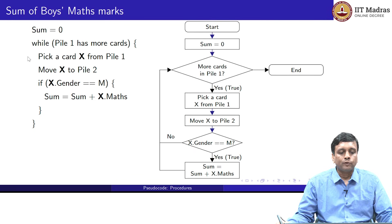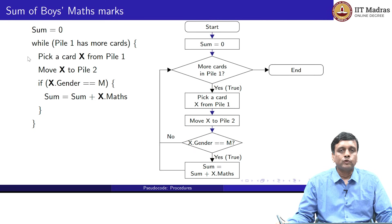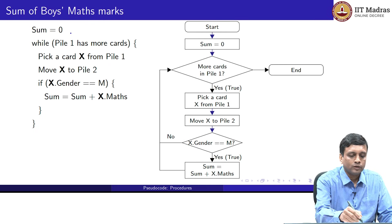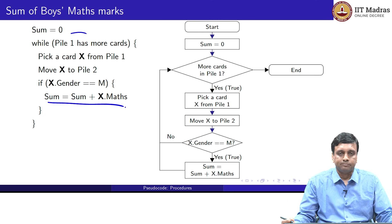Here is a procedure to compute the sum of the boys' maths marks in our grade cards. What we do is loop through all the cards, and if the gender on the card is M, then we accumulate the value of the maths marks for this card in a variable called sum. We initialize sum to 0 and update sum provided the gender is M.